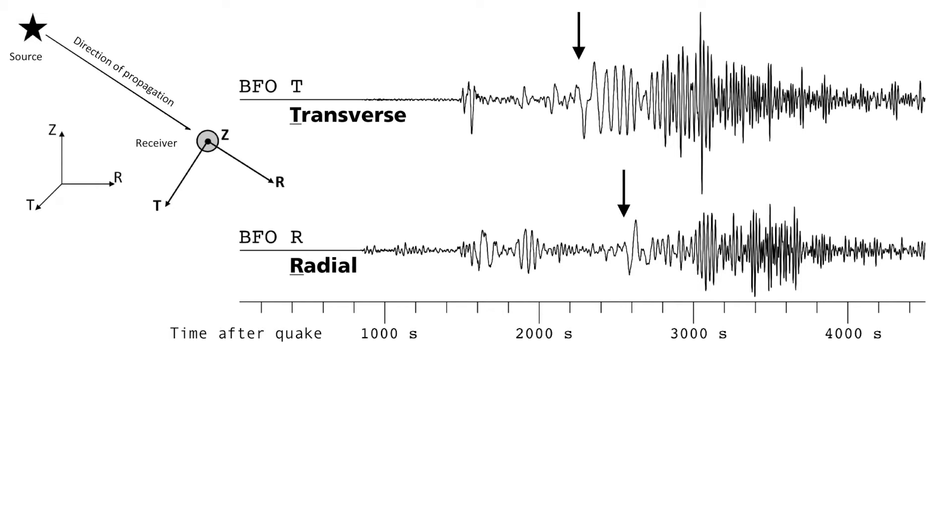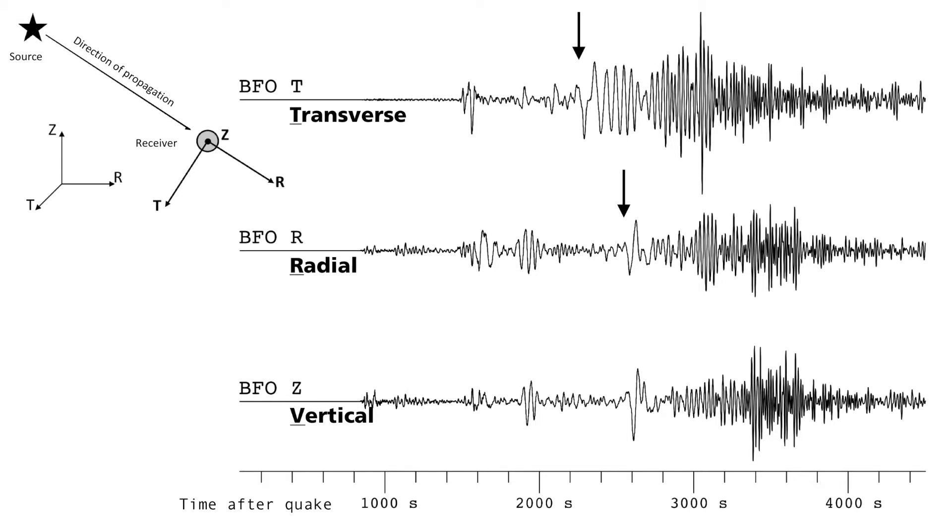Before we speak about this difference, let me show you the third component of the records. The vertically-oriented set component. This is especially where the p-wave, which is the first body wave to arrive, can be seen.